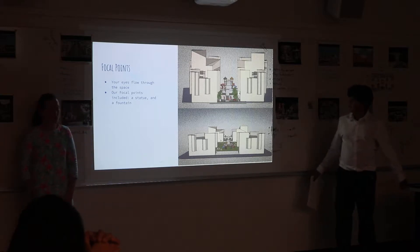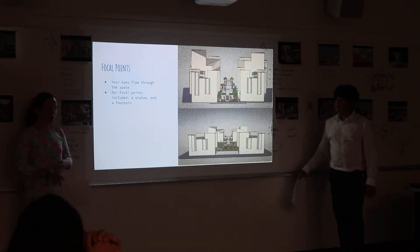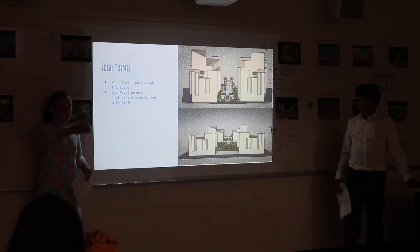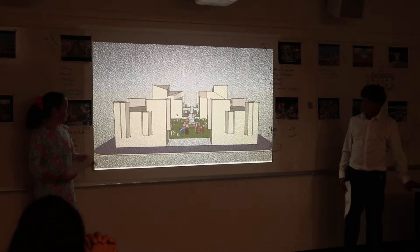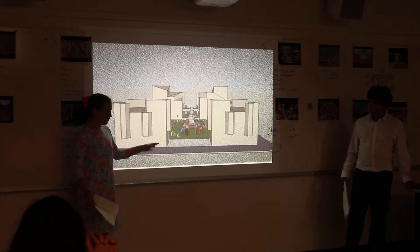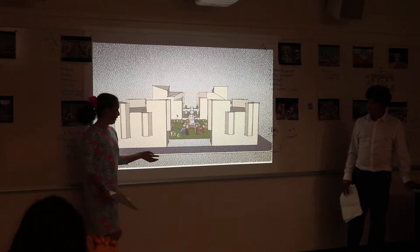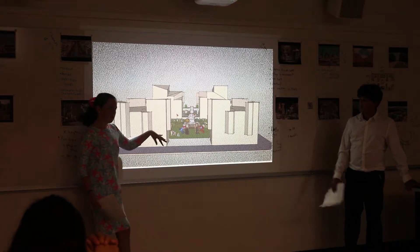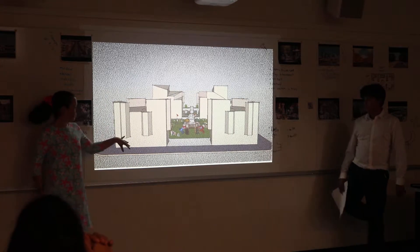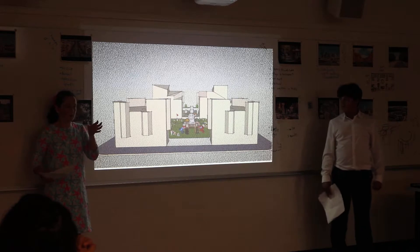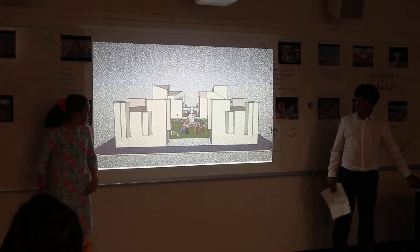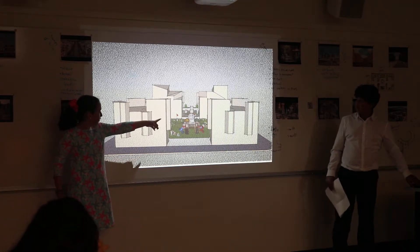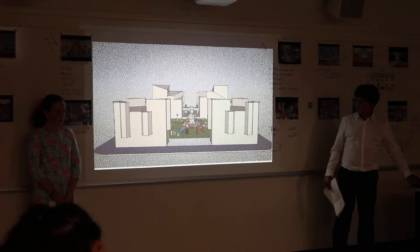So, focal points. Our two focal points are our statue and our fountain. From our two main entrances, you can see the fountain and the statue. Here's a better close-up view. Even though the towers are still a little bit in front of the fountain, you can still see the main top of the fountain through the two towers. And if you look straight, you can see the statue. We created those two L-shapes in the middle to frame each of the focal points so you can see them clearly.